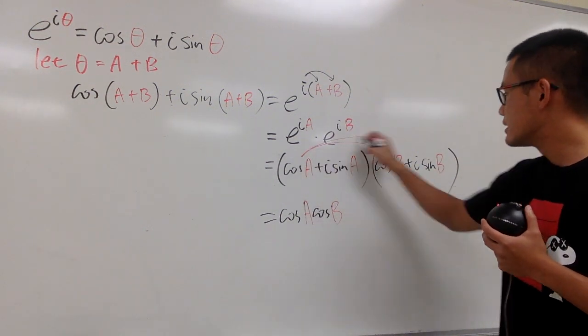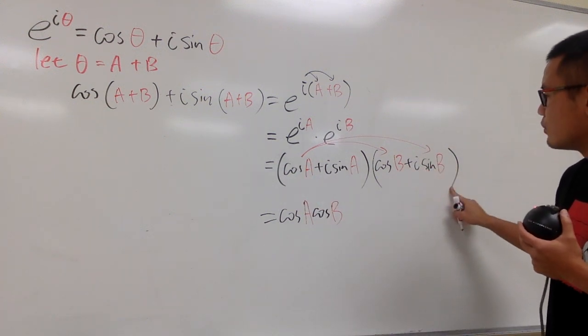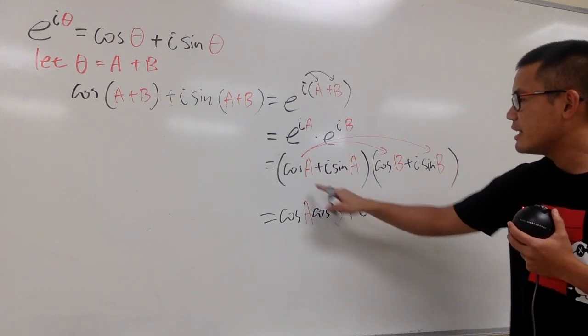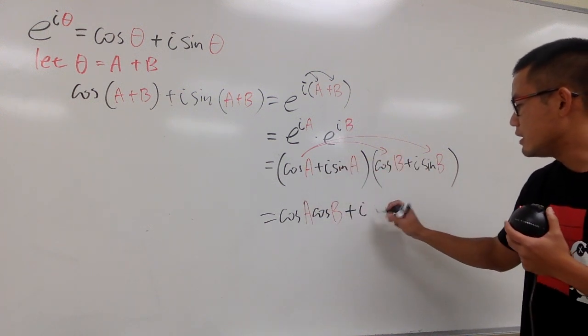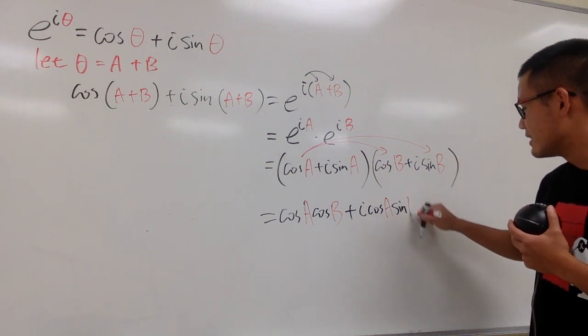And then we do this times that. Cosine a times i sine b. Well, once again, I cannot do too much, so let me put down plus i first, and then cosine a, sine b, like this, right?